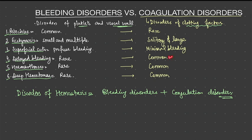These features — delayed bleeding, hemarthrosis, and deep hematomas — are very common in coagulation disorders. That is all about the difference between bleeding and coagulation disorders. I hope the confusion is now clear. Thank you so much.